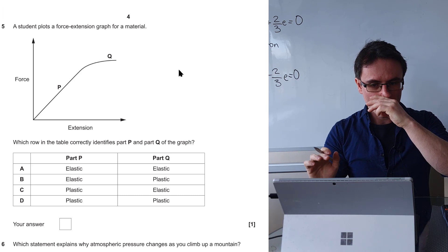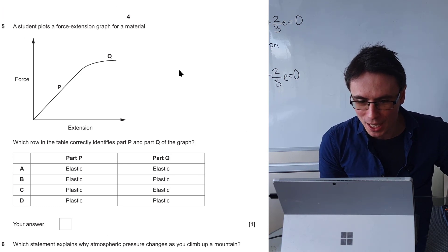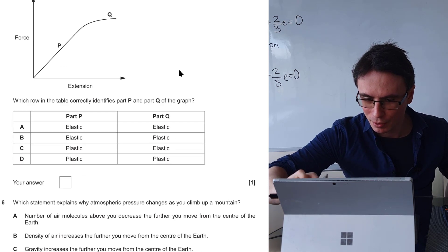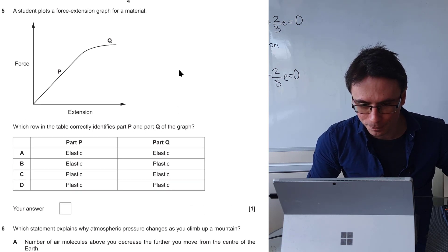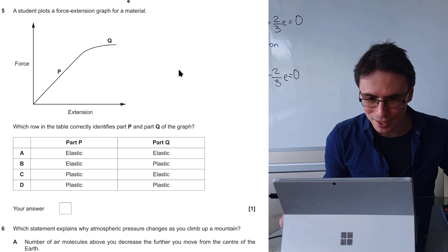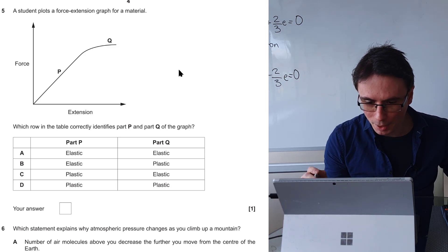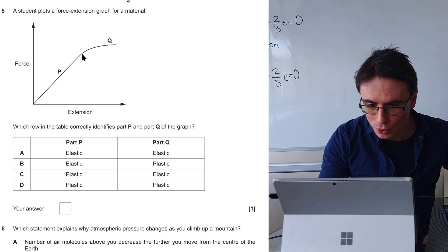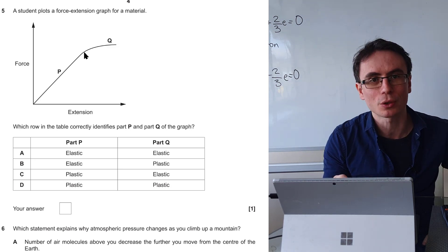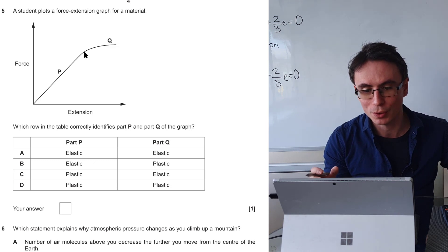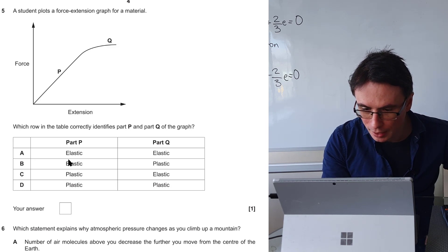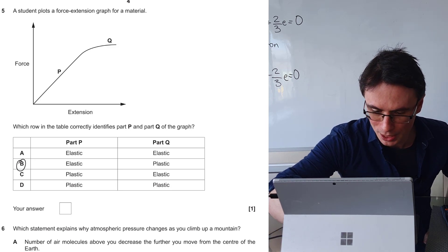Question 5. A student plots a force extension graph for a material. Which row in the table correctly identifies part P and Q of the graph? This one here is really interesting. Part P is elastic for sure. As soon as we reach the elastic limit which is just between the two points, the force is no longer proportional to the extension and we're entering the plastic region. So P is elastic and part Q is the plastic range. The correct answer has got to be B.